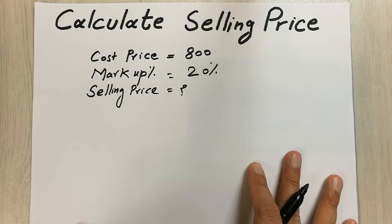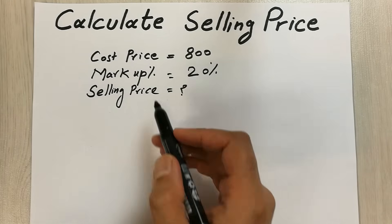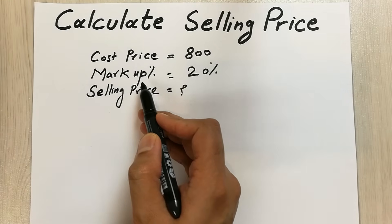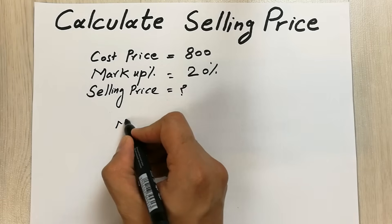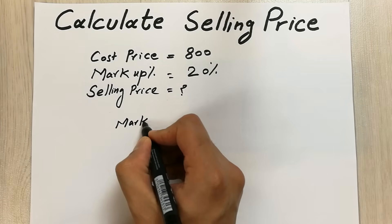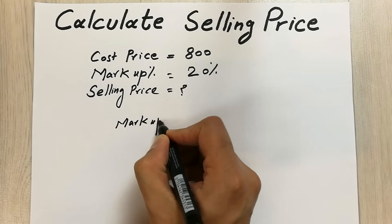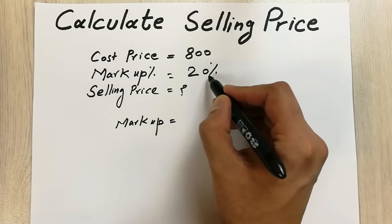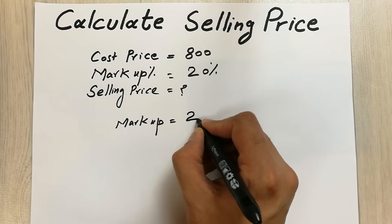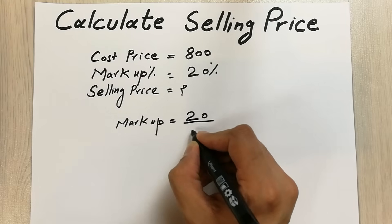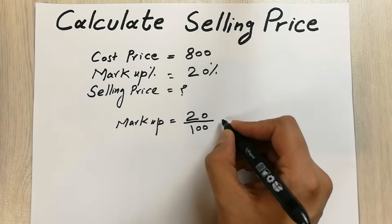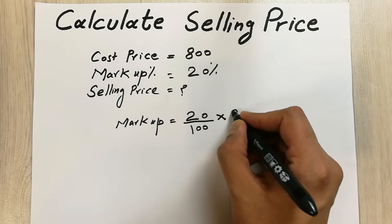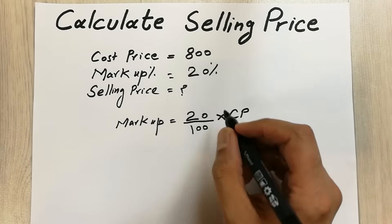First of all, what we have to do is find out the amount of this markup percentage. To find out the markup amount, we have to divide this 20 — which is 20% — by 100, and then multiply it with the cost price.